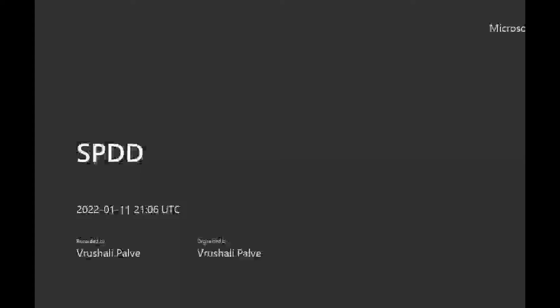Hello and welcome everybody. Today this session is for showing how to do SPDD in your upgrade project. SPDD and SPOW are the two transactions that need to be performed compulsorily during an upgrade. SPDD is performed as part of the pre-upgrade activity in the shadow system before the upgrade is completed, and SPOW needs to be completed after the upgrade is completed. So let's see how SPDD is done.